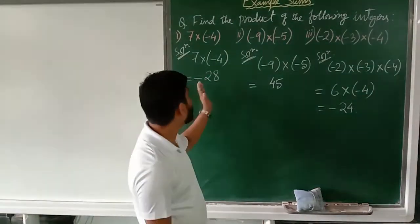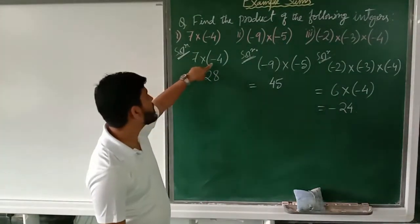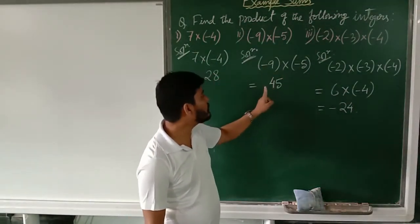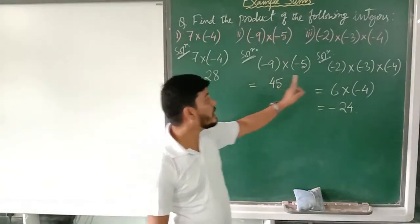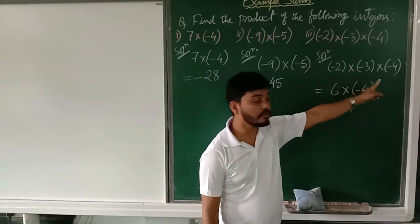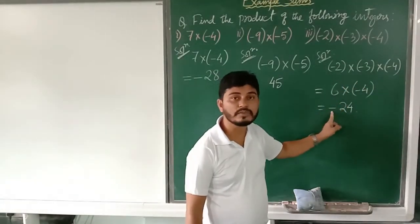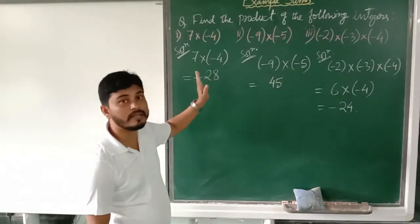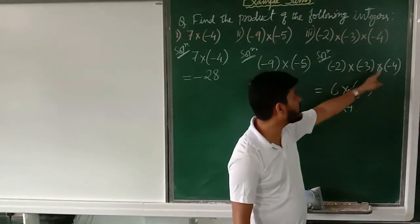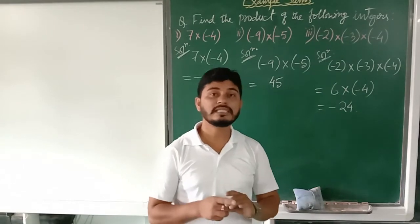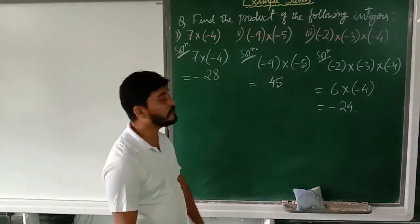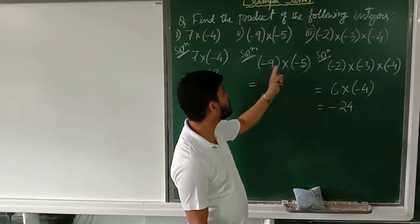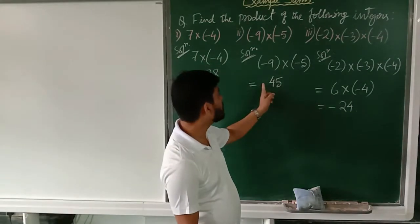Multiplication is simple. Now, one thing we can observe is that in the first example there is only 1 minus, so the minus comes in the product. In the second example there are 2 minus signs, so both minuses multiply and become plus in the product. And here there are 3 minus signs multiplying, so the minus sign also comes in the product. So if the minus sign multiplies an odd number of times, the result will have minus. And if the minus sign multiplies an even number of times, the product will be positive.